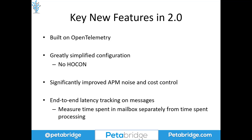Now, what are the key features in Phobos 2.0? The first is that we're built on top of OpenTelemetry. Phobos 1.0 was built on a different set of technologies, but OpenTelemetry is now the new standard, which should future-proof Phobos far into the future on the .NET platform. We've also greatly simplified our configuration — there's no Hocon required at all anymore for Phobos 2.0. We're built primarily on top of Akka.NET hosting, so this all plugs into the IServiceCollection interface used for configuring most .NET applications. We've also significantly improved the APM noise and cost control system — our trace filtering engine — as well as configuration for turning metrics or tracing on and off for different parts of your Akka system, making it easy to measure what you want and ignore what you don't.